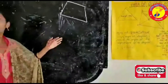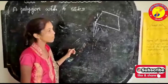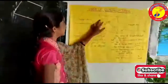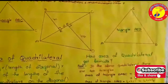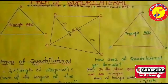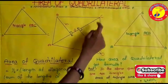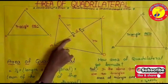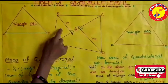Friends, how does the area of quadrilateral get this formula? Let's prove. This is a quadrilateral. I named this quadrilateral as ABCD. Draw a line from A to C — this is the diagonal. This diagonal divides this quadrilateral into two triangles.